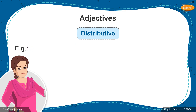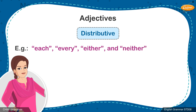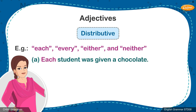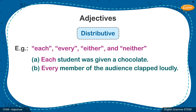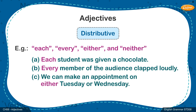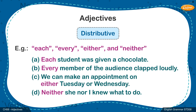The third type of adjective of number is the distributive. It is used to refer to individual nouns within the whole amount. Examples of this kind of adjective include each, every, either, and neither. For example: 'Each student was given a chocolate.' 'Every member of the audience clapped loudly.' 'We can make an appointment on either Tuesday or Wednesday.' 'Neither she nor I knew what to do.'